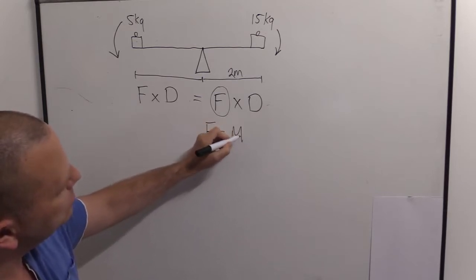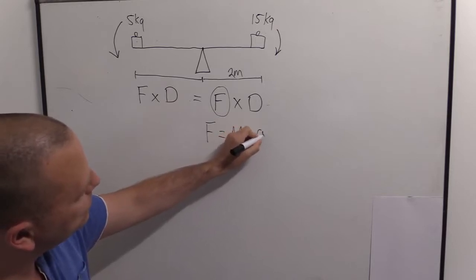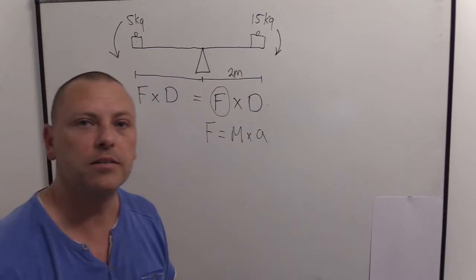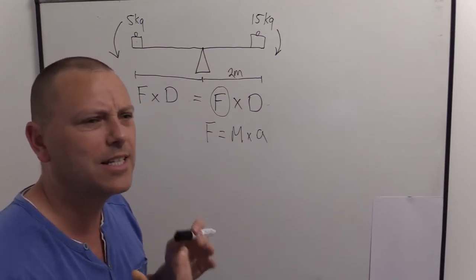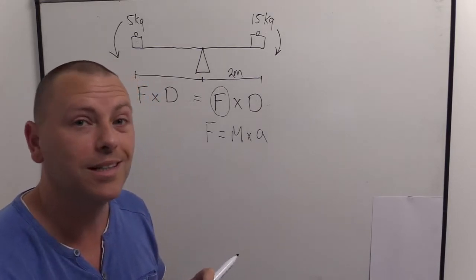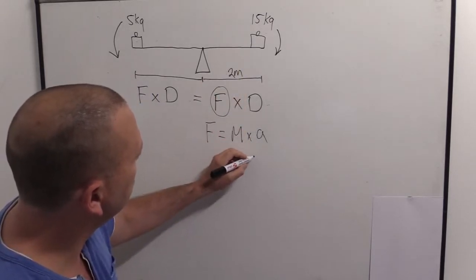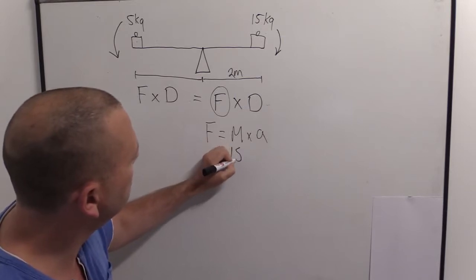So force is mass times any acceleration applied to it. Otherwise the mass would just stay in space-time wherever it is, unless there's some kind of accelerating something applied to it and going anywhere. So in this case, what would that be? That's going to be gravity. So we've got 15 kilograms times now gravity is 9.81 meters per second per second.